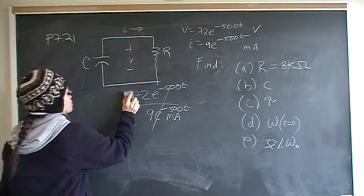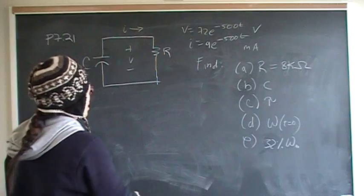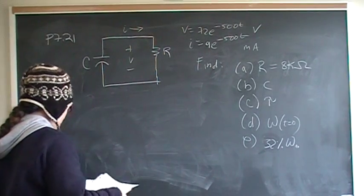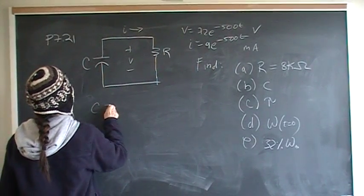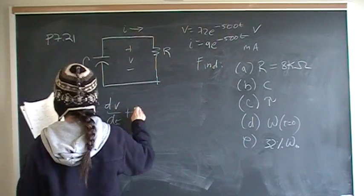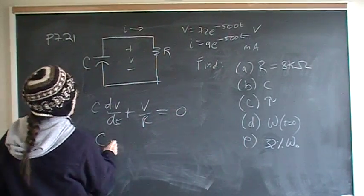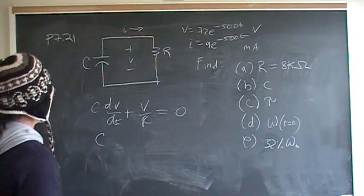Now for part B, we said we need the, I did it this way. I did C dV/dt plus V over R is equal to 0. And this isn't too hard of math.